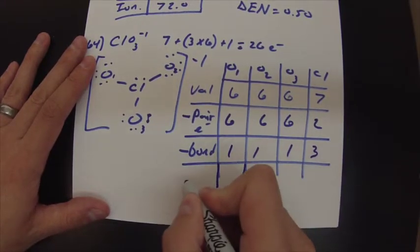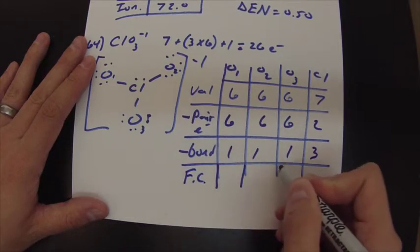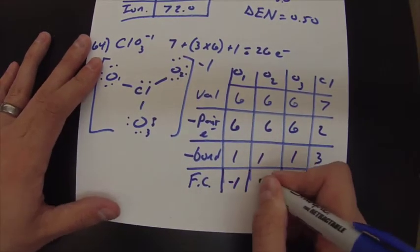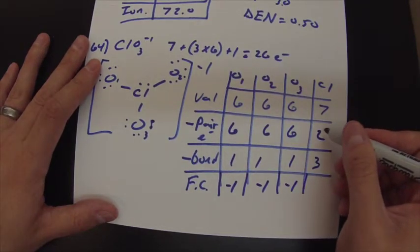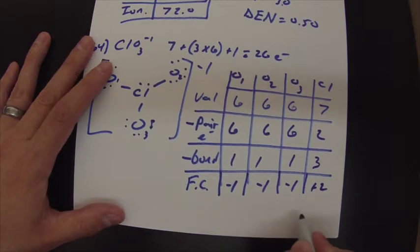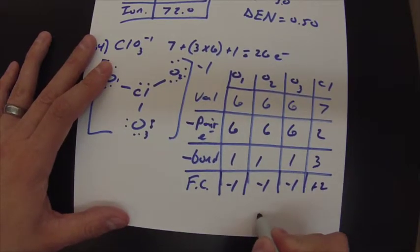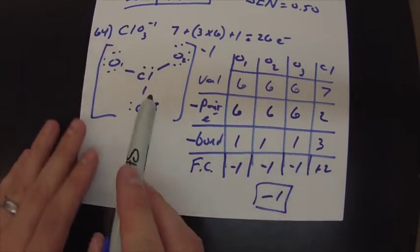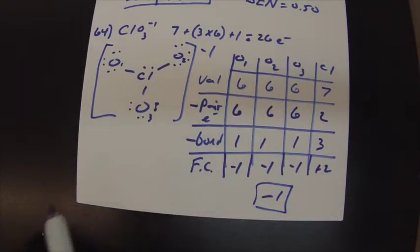So then your formal charge is right here. It's 6 minus 6 minus 1 is negative 1. So they're all going to be negative 1. 7 minus 2 minus 3 is positive 2. And if you sum all those up, they'll sum to negative 1, which they should, because your ion has a charge of negative 1. So that means you did it right.